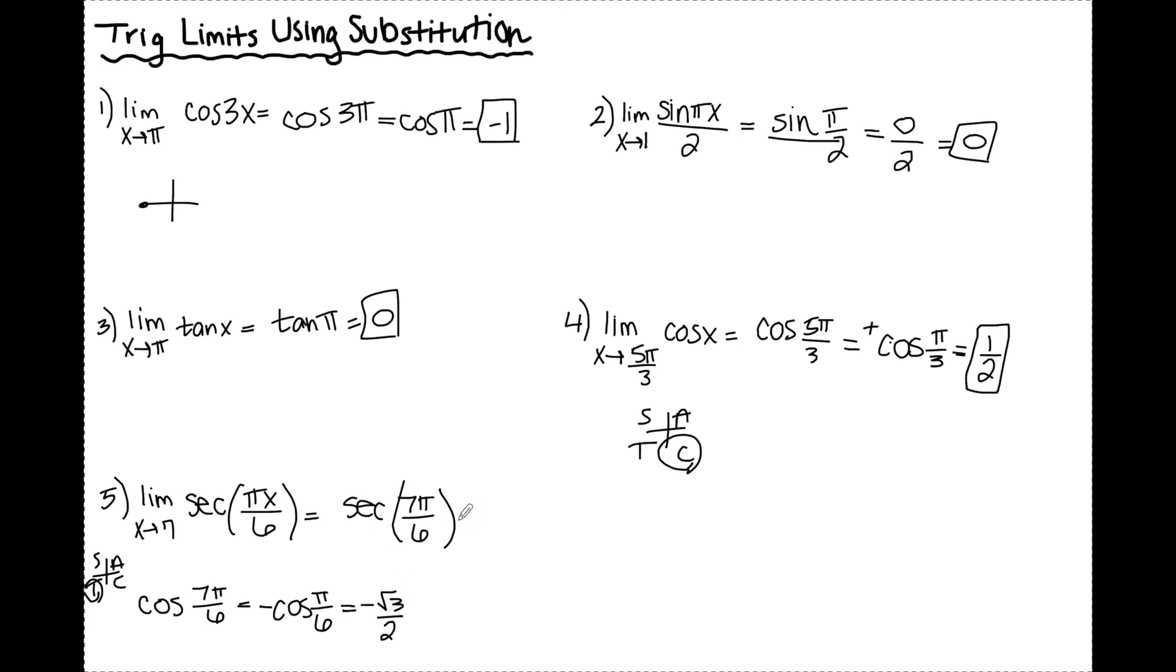Secant is the reciprocal of cosine. So that means secant of 7π/6 is negative 2/√3. And I'm not going to leave this with a radical in the denominator. So I'm going to rationalize by multiplying by √3/√3. And I get negative 2√3/3.